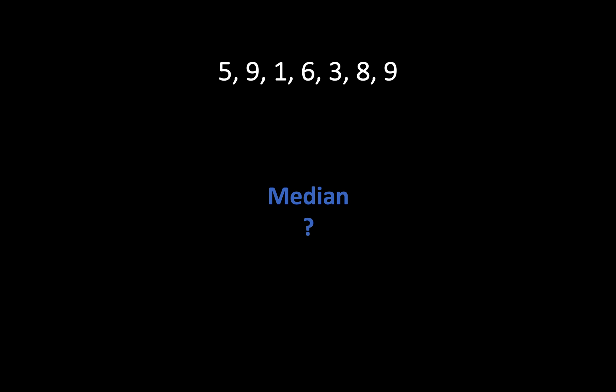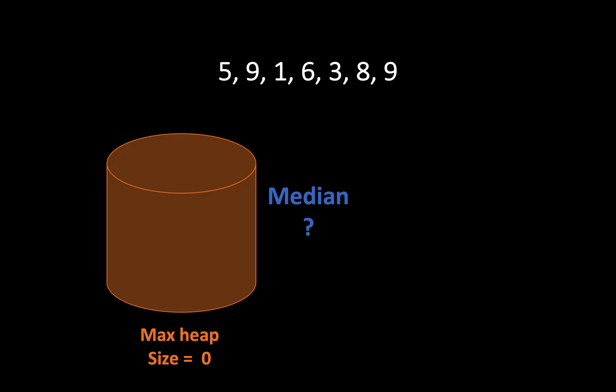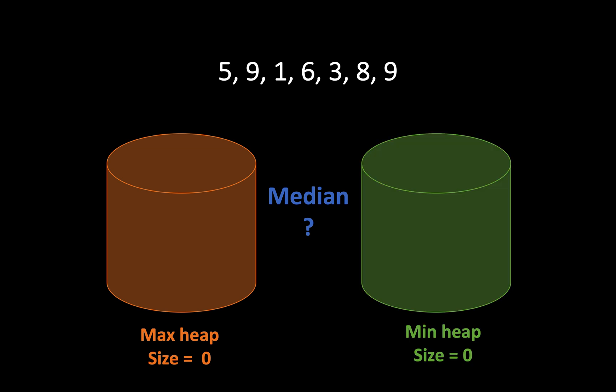First of all, I start with an empty max heap and an empty min heap of size 0. Now I consider the first element, which is 5. Because our max heap is empty, I just put 5 there. The max heap size is 1 and the min heap size is 0. So the median, if I just look at the heaps themselves, is 5, because I take the root of the heap whose size is the biggest.